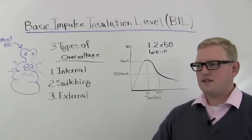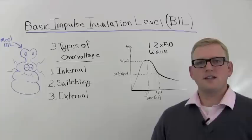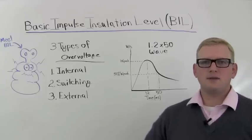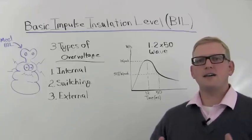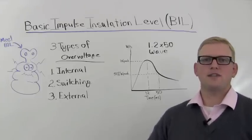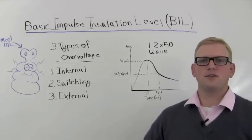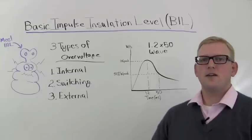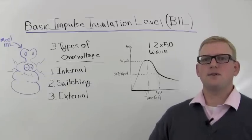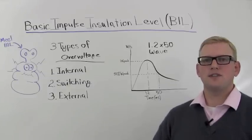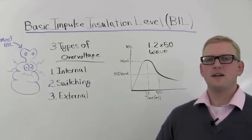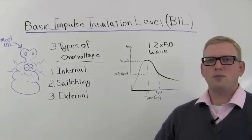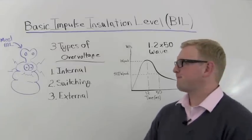So the equipment has insulation which has to be rated at a high enough level to withstand these voltages, called transients. There are three types of overvoltages that can occur that will play into BIL.